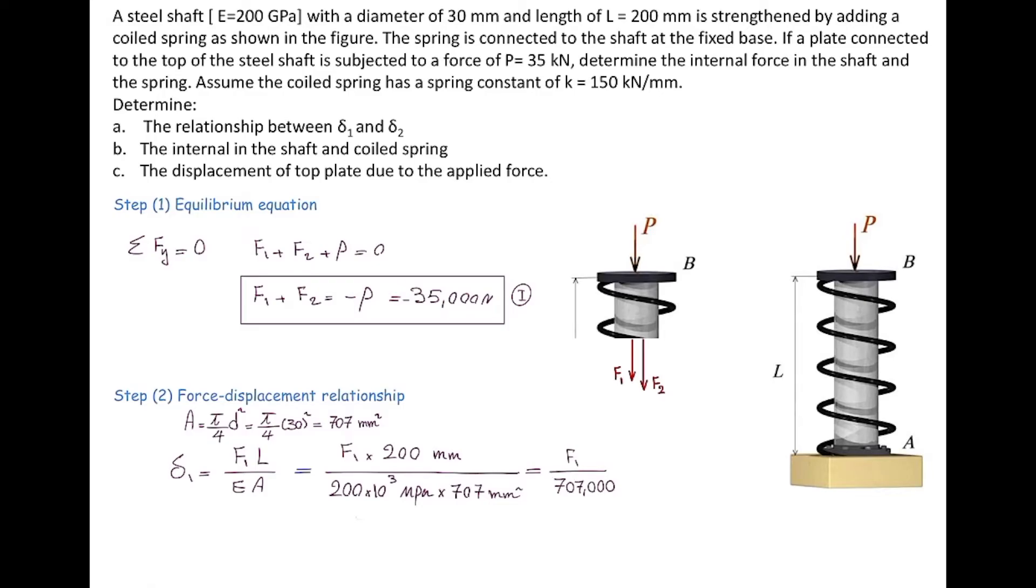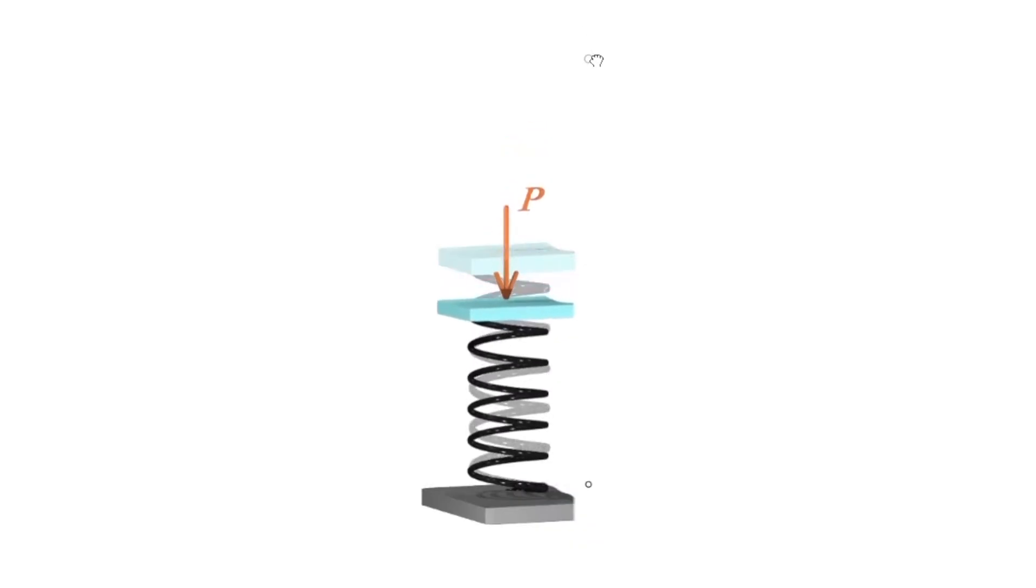In a similar way, we can calculate delta 2 in terms of the unknown force F2. But in the coil spring, the constant of spring is directly given. Let me review what is the constant of spring. So recall from physics. In spring, the deformation is proportional to the applied force, also a constant that is intrinsic property of that spring, which is called the spring constant.